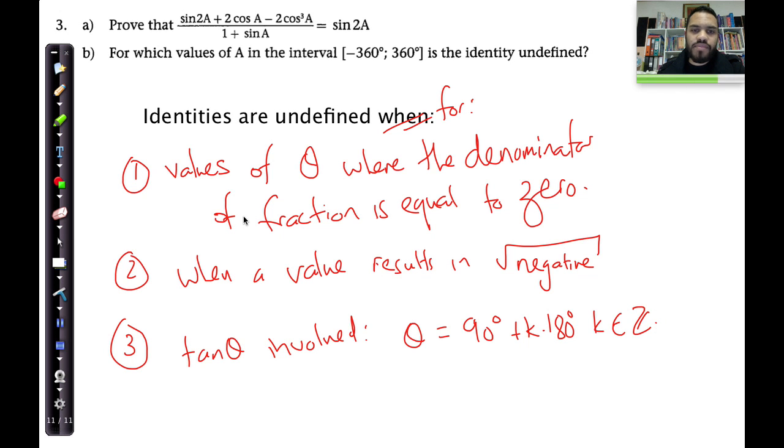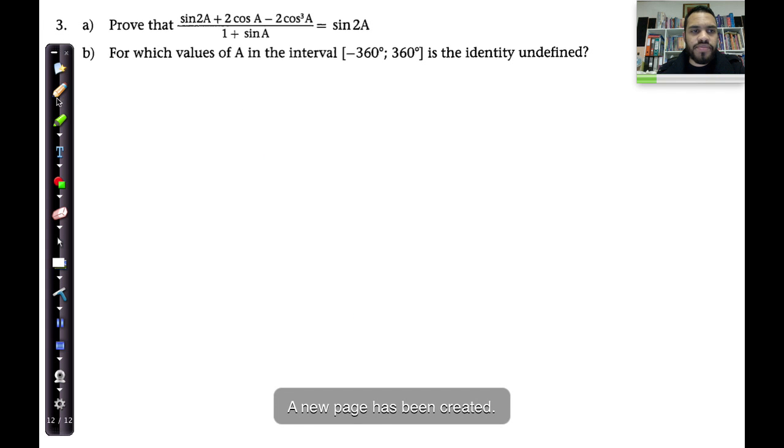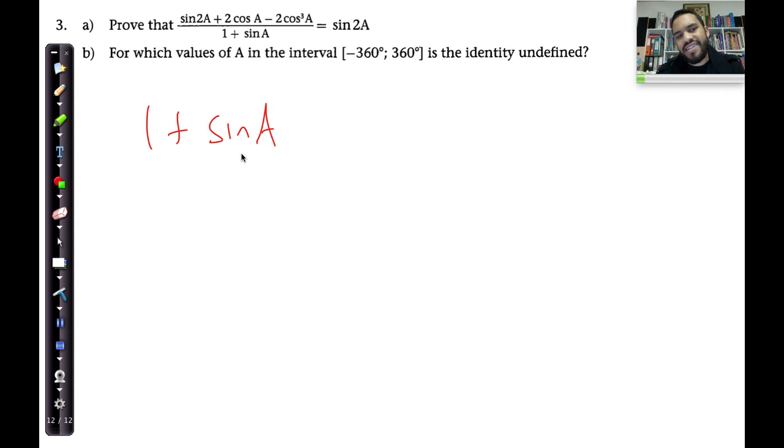And those are the three times when identities are undefined. So let's look at this. This is a fraction, and as you can see, the denominator in this fraction is one plus sine A. It is one plus sine A.